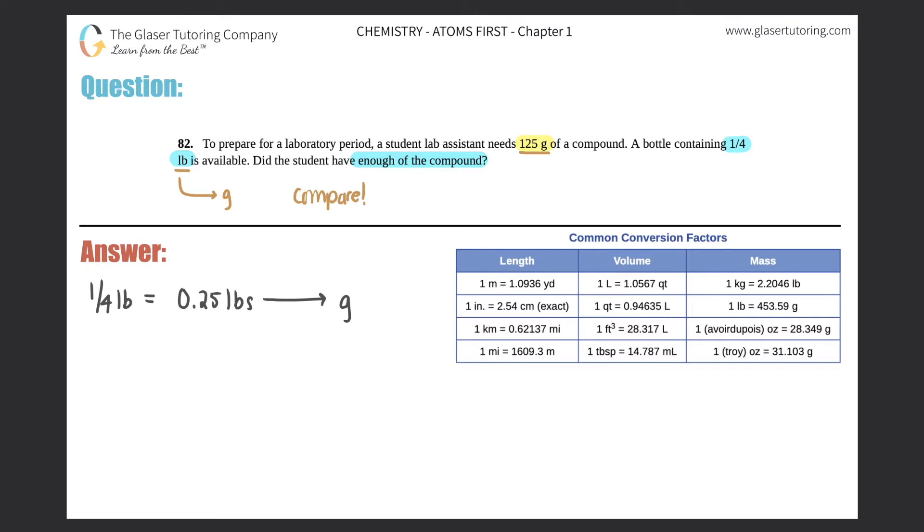So all we got to do is convert pounds to grams. And do we have a direct conversion? If we look at our mass conversion factor chart, one pound equals 453.59 grams. So yeah, we do know a direct conversion. So this is only a one-step problem.